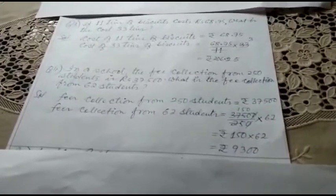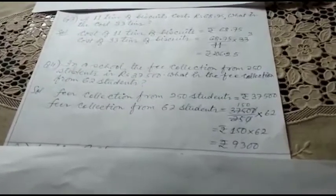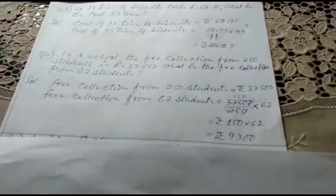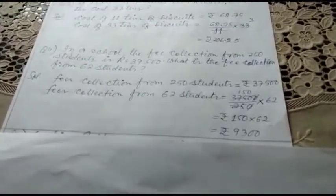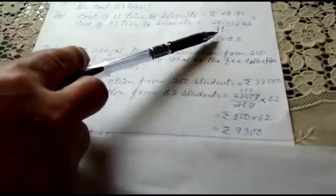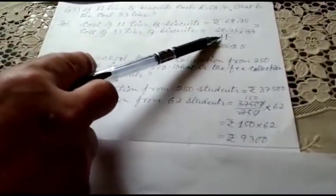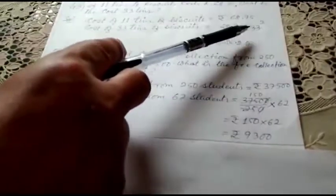If 11 tins of biscuit cost rupees 68.75, what is the cost of 33 tins? This is a unitary method question. Cost of 11 tins of biscuit: rupees 68.75. Cost of 33 tins of biscuits: 68.75 divided by 11. When I divide this, it is for unitary method, means for one tin of biscuit, and I multiply by 33.